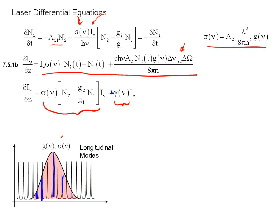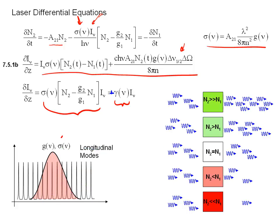Another way to look at this is not only does this gain term depend on the cross-section or the line shape, but it also depends on the population difference. So in the case that N2 is much greater than N1, no matter what frequency you're at, a small number of photons coming in is going to give you a proportionally larger number of photons coming out.